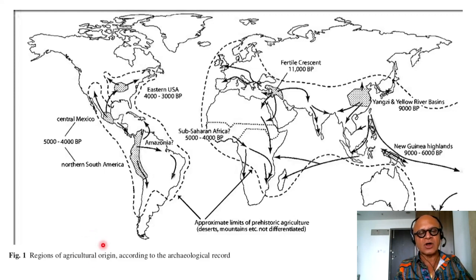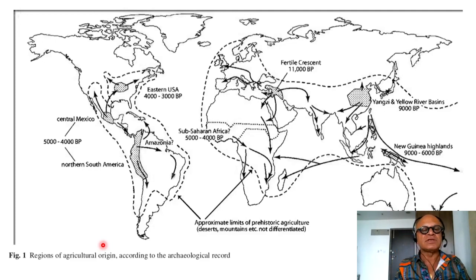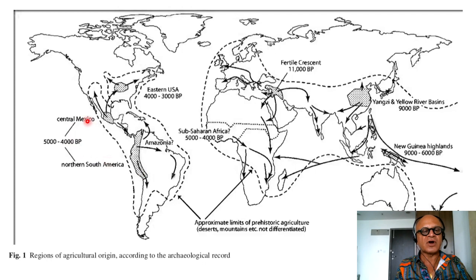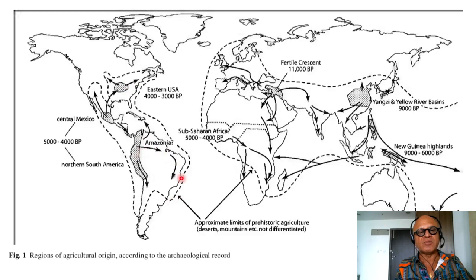Regions of agricultural origin according to archaeological records — related to the maps we've already seen — include Central Eastern U.S., Mesoamerica, South America, and so on. These come with dates: Central Mexico and Northern South America at 5,000 to 4,000 BP; 4,000 to 3,000 BP in eastern U.S., with potential range of locations, demographic transitions, or migrations. Sub-Saharan Africa: 5,000 to 4,000 BP. The Fertile Crescent is expected to have the oldest evidences so far.